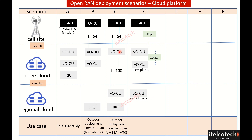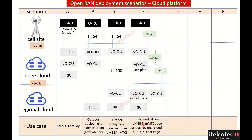The number of RUs that can be catered by one DU is quite high — around 64 RUs as per the O-RAN specification. Simultaneously, one CU can cater to around 100 DUs, though in practicality that is more of a theoretical number. With Scenario C1, we can achieve all three different service types.